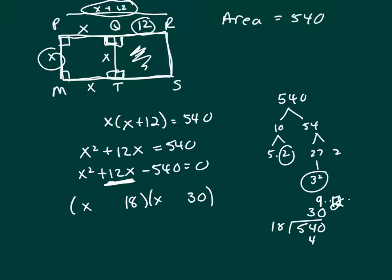Because the difference is 12 and I want it to be a positive 12. So put a plus sign there and a minus sign there, equals 0. So this gives me X equal 18. Because X equal negative 30, we can't have a negative width or distance. So X is 18.